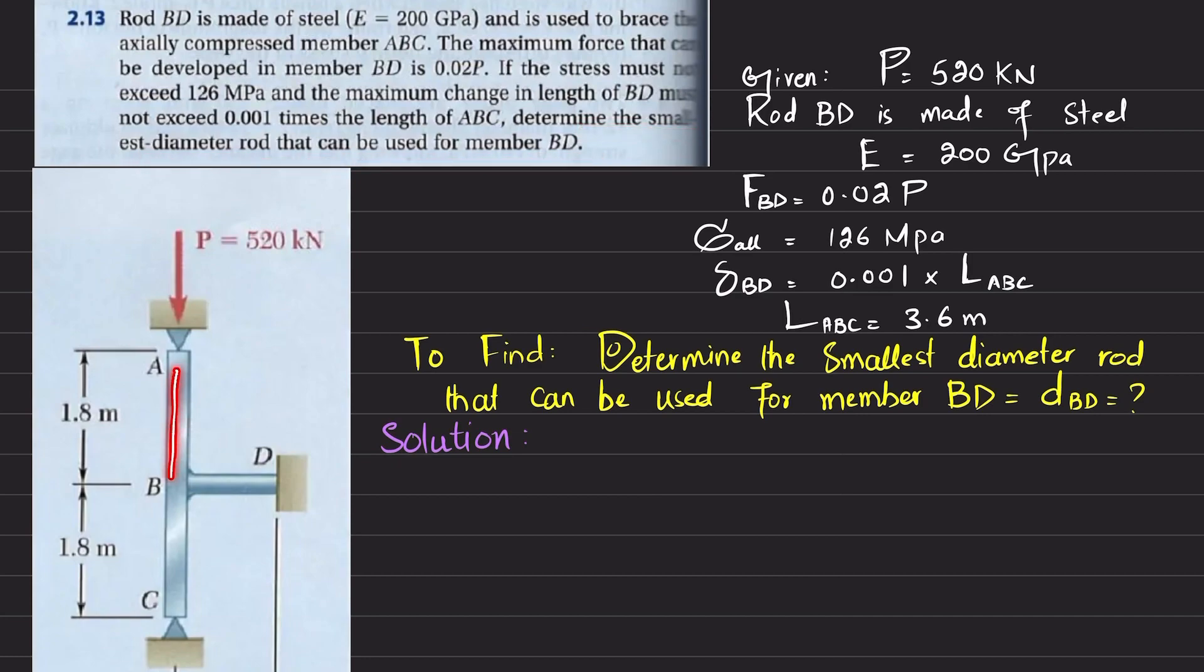You can see this is member ABC that is axially compressed and that is supported by this rod BD. This rod BD is made of steel, E is given, P load is given. Also, force in BD rod is 0.02 times P, and allowable stress in this BD is 126 megapascal. Change in length of BD is 0.01 times length of ABC, which is 3.6. So you have to determine the smallest diameter. Let's start with the solution.